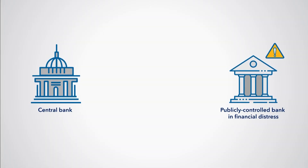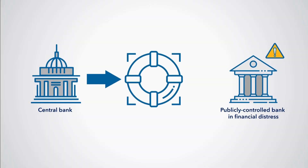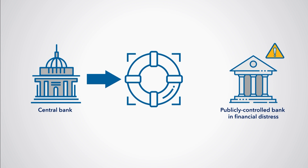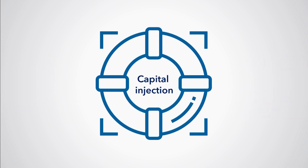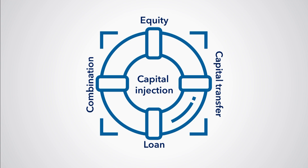Let's say a publicly controlled bank is in financial distress. The central government intervenes by providing financial assistance, also called a financial bailout, to the bank. In macroeconomic statistics, we refer to such financial assistance as a capital injection. Depending on the circumstances, this capital injection is recorded as a loan, a capital transfer, an acquisition of equity, or a combination of these.